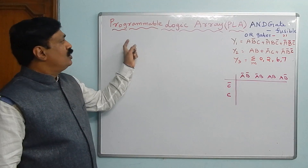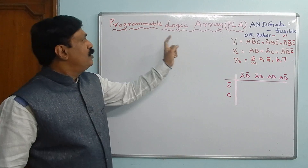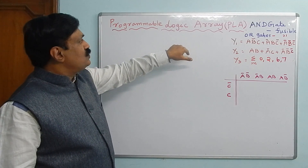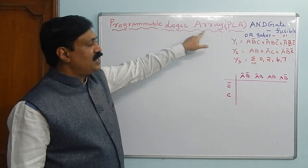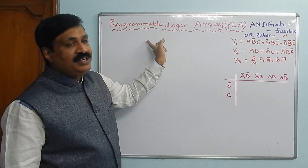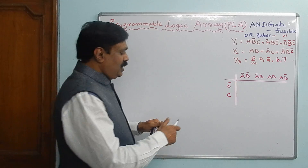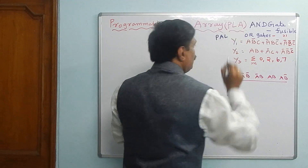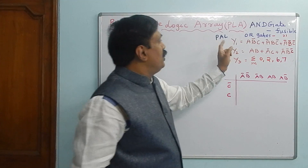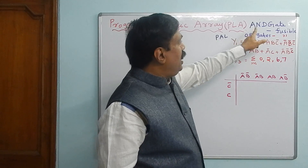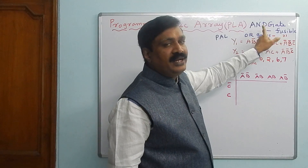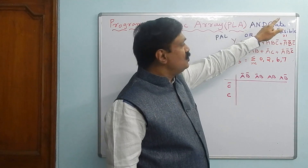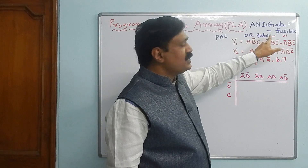Good morning. Last class we have seen Programmable Array Logic, PAL. Now we are going to see Programmable Logic Array, PLA. The difference between PAL and PLA is very simple. In PAL, AND-gates are fusible but OR-gates are fixed. Here in PLA, both AND-gates as well as OR-gates are fusible.